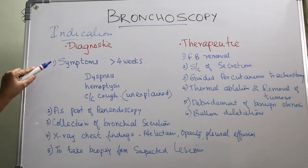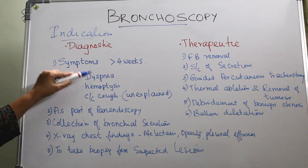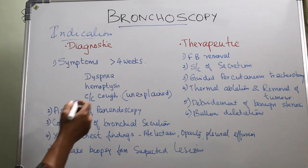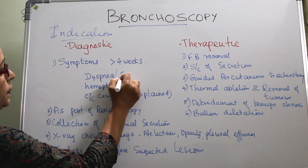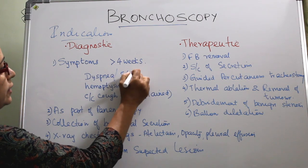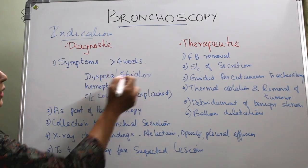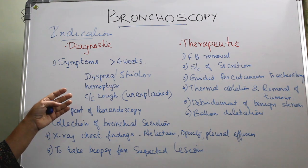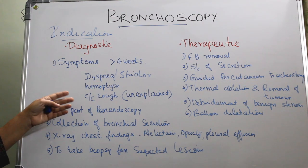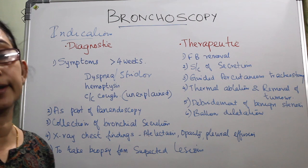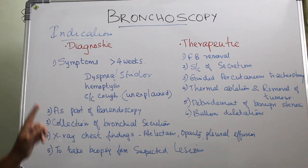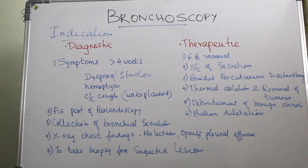For diagnostic indications, symptoms lasting more than four weeks — such as dyspnea or stridor (difficulty in breathing), hemoptysis (spitting of blood), or unexplained chronic cough — are indications to go for a bronchoscopy.